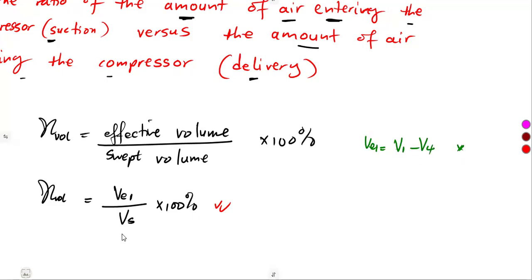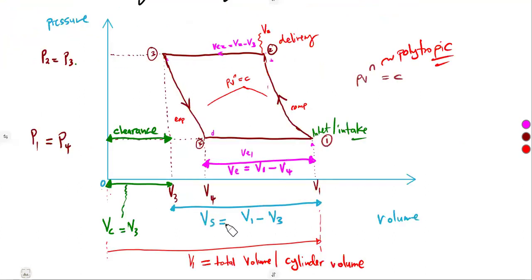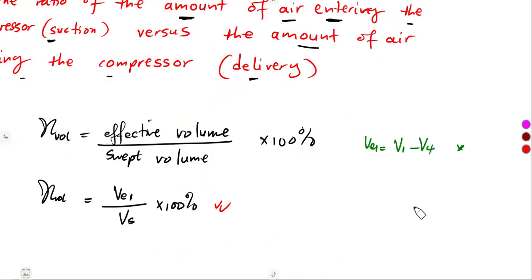We talked about this. And the swept volume, if we go back here, that is our swept volume — V1 minus V3, where V3 represents the clearance volume. So meaning to say, we can play around with these formulas depending on what we are given.